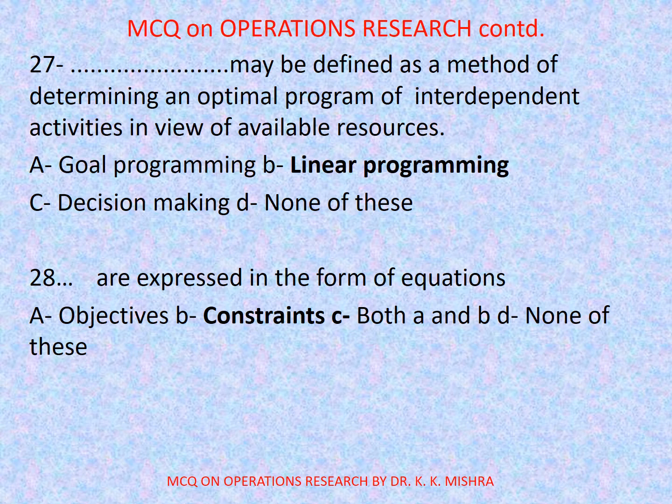Question number 27: Dash may be defined as a method of determining an optimal program of interdependent activities in view of available resources — options are: A. Goal programming, B. Linear programming, C. Decision making, D. None of these. Correct option is B: Linear programming. Question number 28: Dash are expressed in the form of equations — options are: A. Objectives, B. Constraints, C. Both A and B, D. None of these. Correct option is B: Constraints.